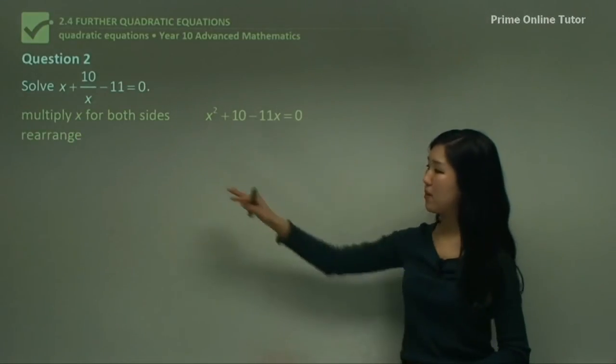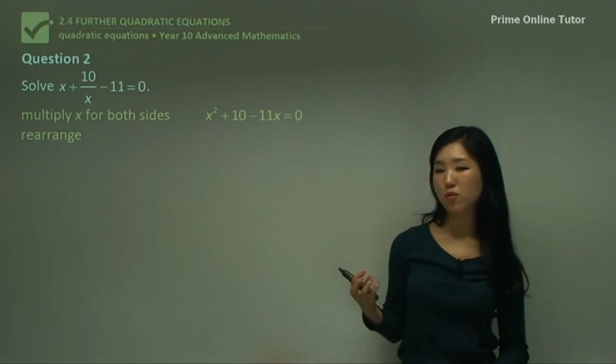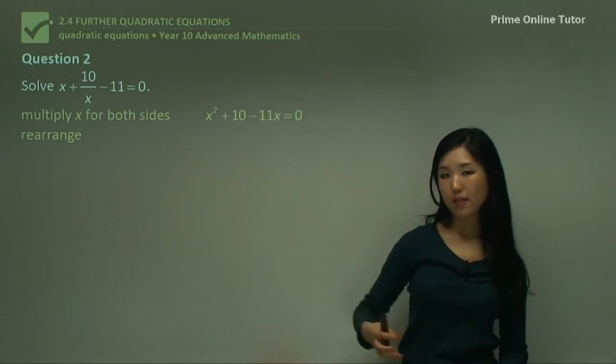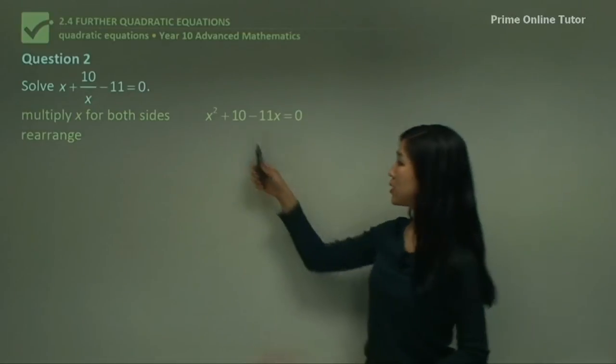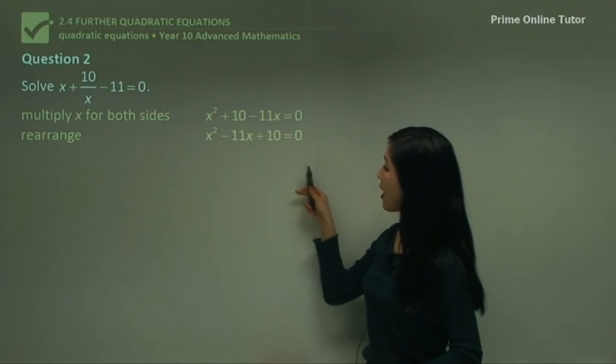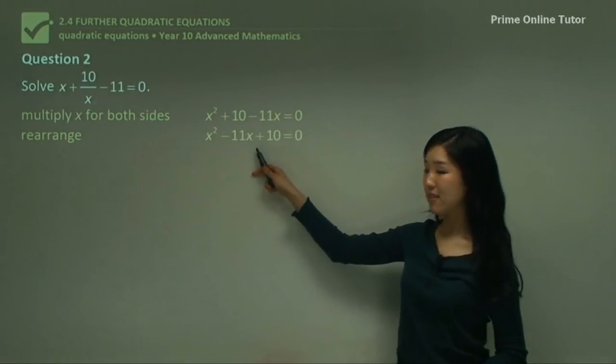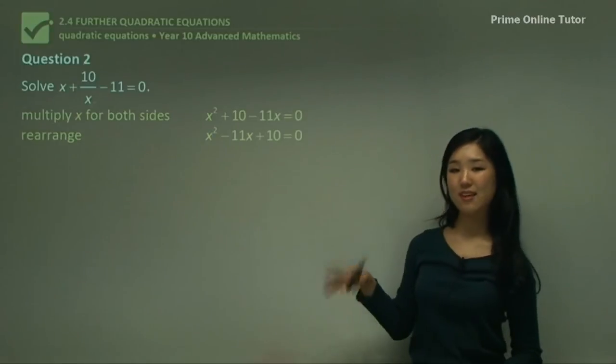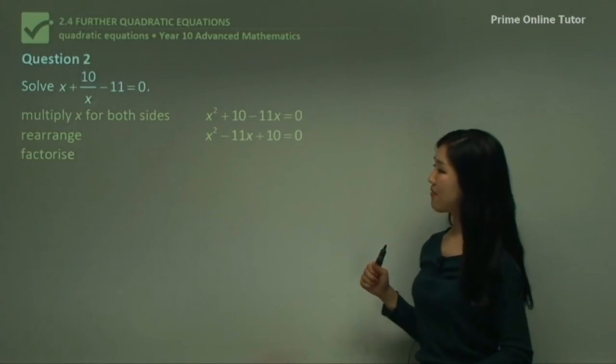Now it's all equal to 0, but now I'm going to rearrange it because I always want to keep that order. x², then x, then the constant. So I have x² and I'll have -11x next and then +10 at the end. That's equal to 0.